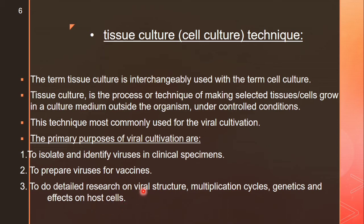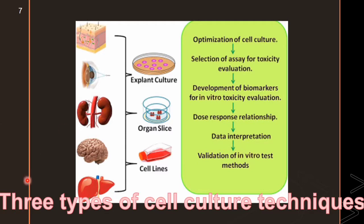There are three types of cell culture techniques used for viral cultivation: the first is organ culture, the second is explant culture, and the third is cell line culture.